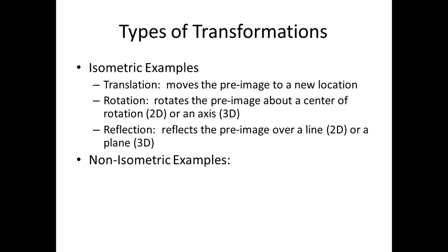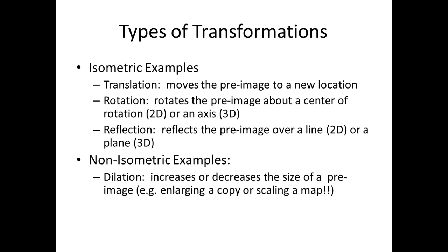And some examples of the non-isometric transformations. There's dilation. And everybody's familiar with this if you've worked with a copy machine. The dilation is going to increase or decrease the size of a pre-image. So think of that as photocopying, enlarging, or shrinking. It increases or reduces the lengths but it keeps the angles the same. Or the other application might be scaling of a map. Another non-isometric example is to skew something. Which is to essentially shear it if you will. Push it over. And an example of that would be if you wanted to skew the sides of a square into a rhombus.